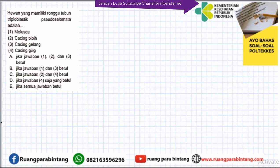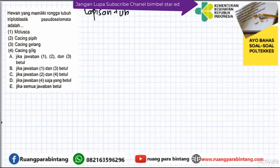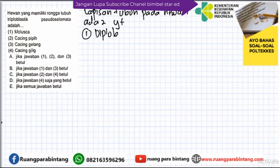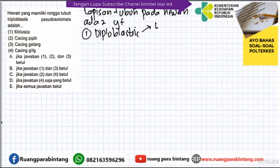Kita akan mencoba menjawab soal ini. Pertama, kita bahas dulu apa itu triploblastik pseudocelomata. Lapisan tubuh pada hewan ada 2 jenis. Yang pertama diploblastik, artinya hewan yang memiliki 2 lapisan tubuh: endoderm (lapisan dalam) dan ectoderm (lapisan luar tubuh).